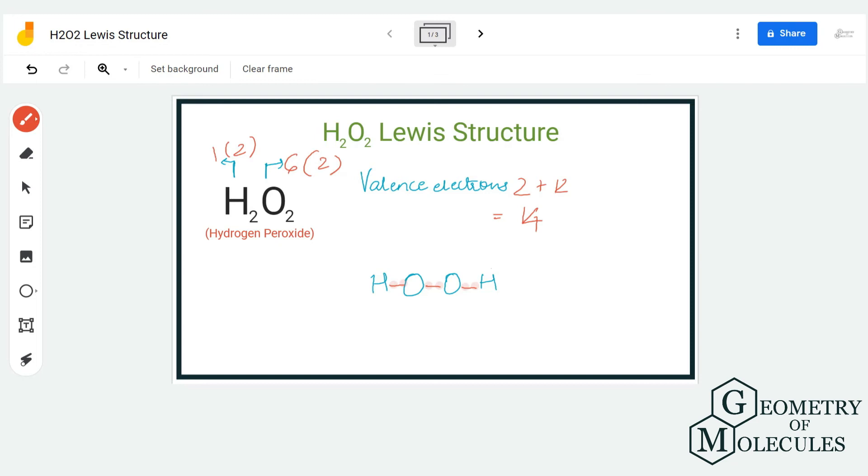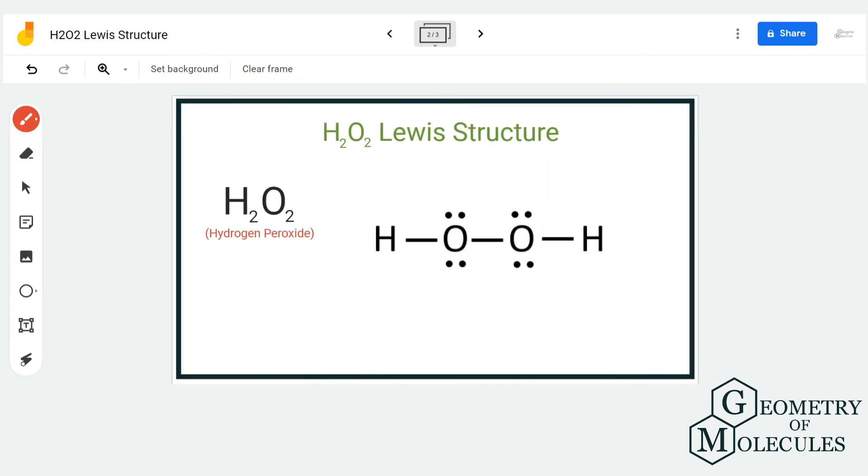So we are going to place two, four, six, and eight. Doing that, we have complete octets for oxygen atoms because each has eight valence electrons in its outer shell, and hydrogen atoms have two valence electrons in their outer shell.